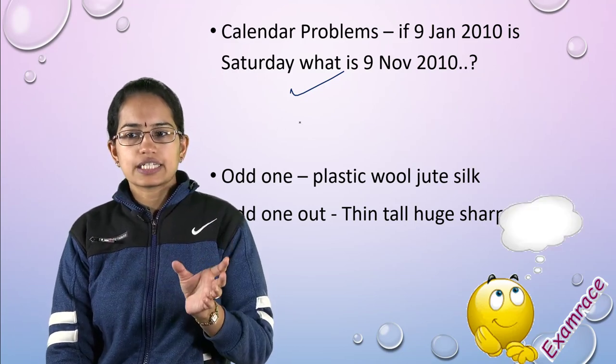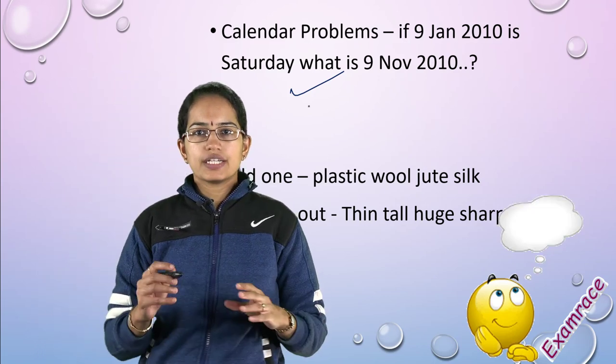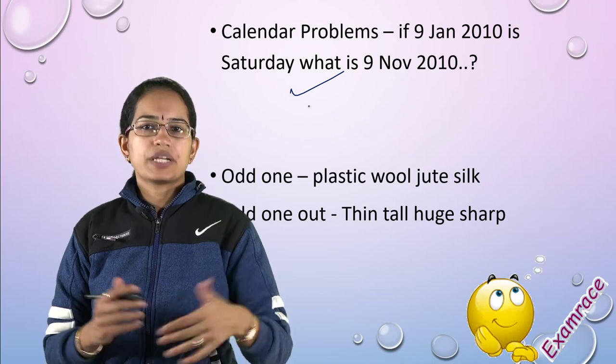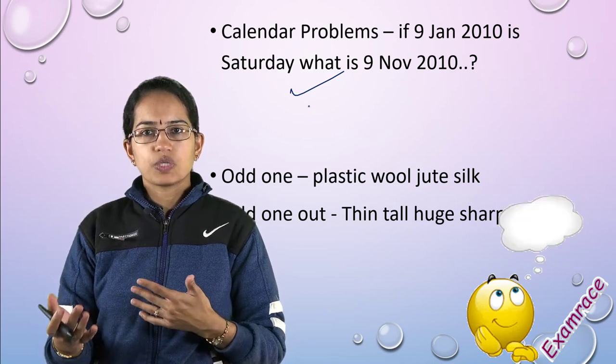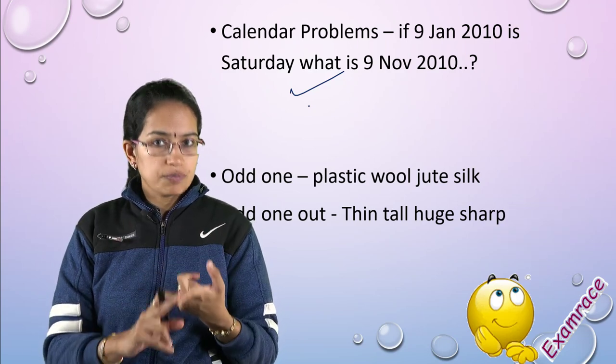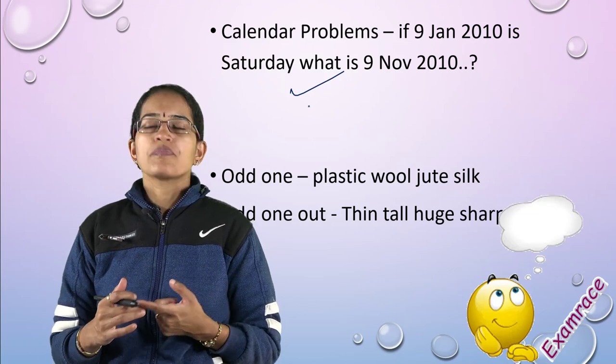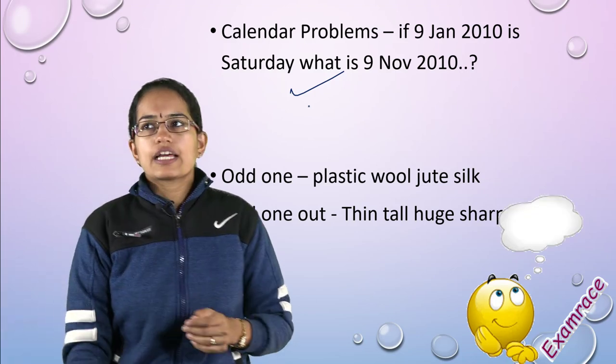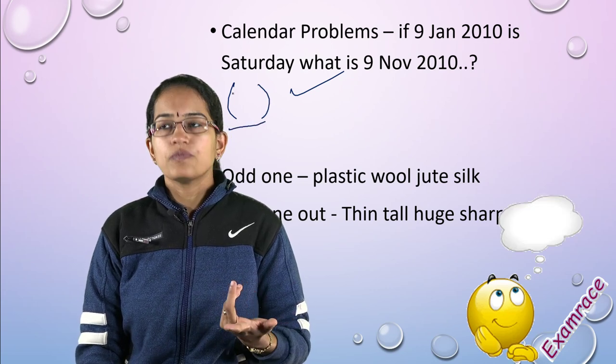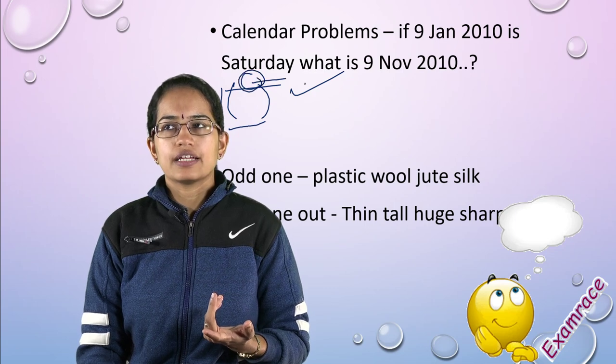Calendar is very simple - you calculate the total number of days. Let's say 9 January 2010 is Saturday, calculate 9 November 2010. You calculate all the number of days. February has 28 days, March has 31 days. Make sure whether it's a leap year, then count the days of February and add all the days in between.